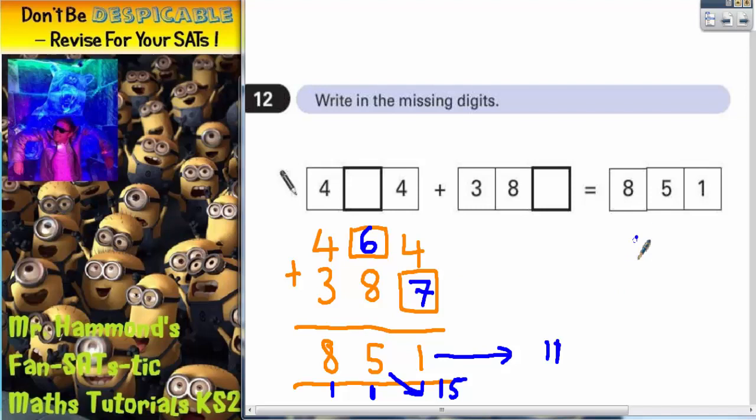To see if we would get 851. So four and seven is eleven. Carry the one. Six and eight is fourteen. Plus that one is fifteen.